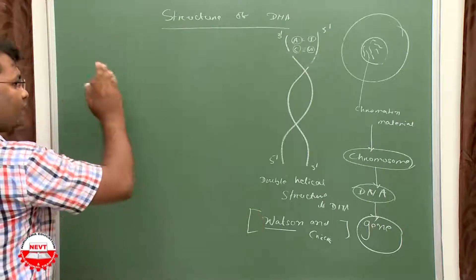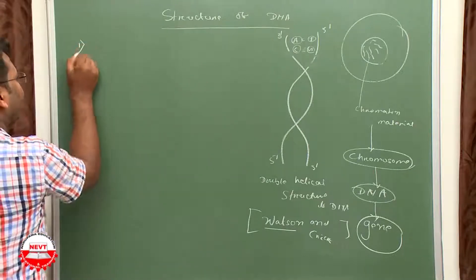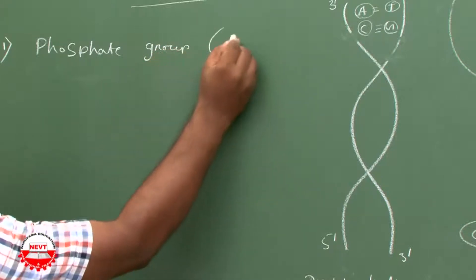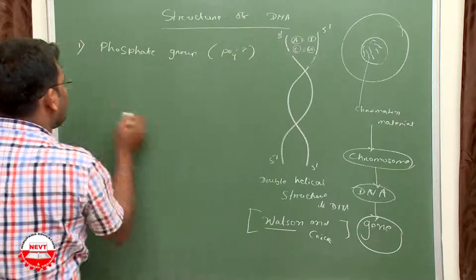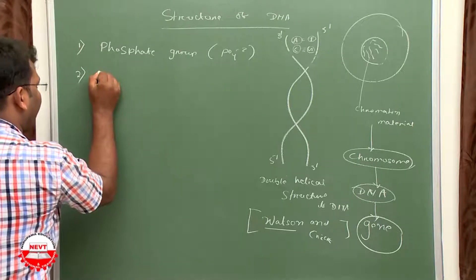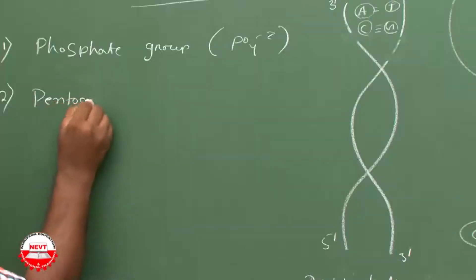The main portions of DNA is nucleotide. DNA contains three parts: first is phosphate group, second is pentose sugar, that is ribose sugar.